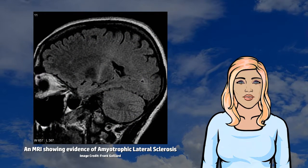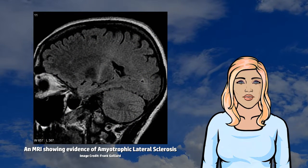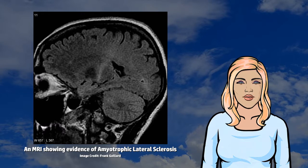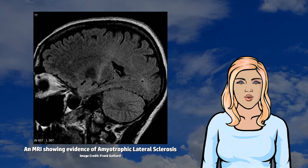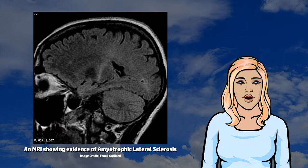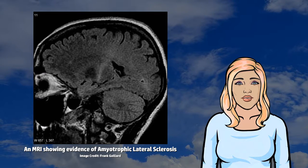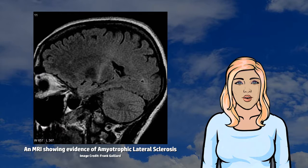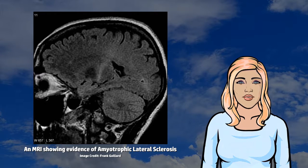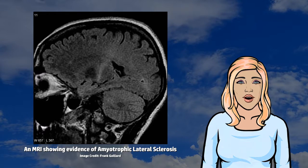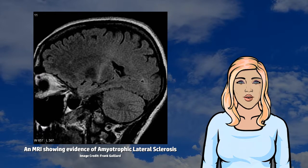ALS is characterized by stiff muscles, muscle twitching, and gradually worsening weakness due to muscles decreasing in size. This results in difficulty speaking, swallowing, and eventually breathing.